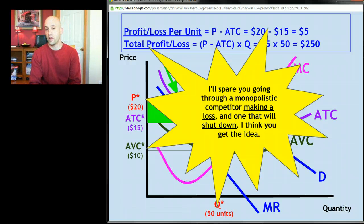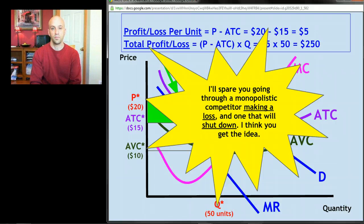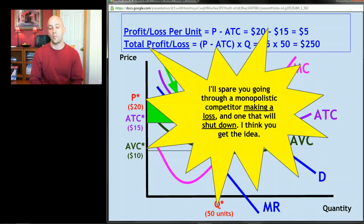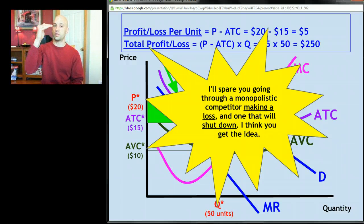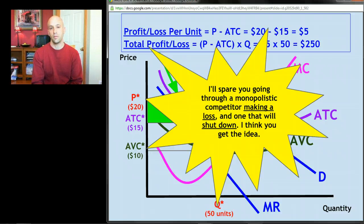I'll spare you going through the analysis for a monopolistic competitor operating at a loss or shutting down, but it's exactly the same as with monopolies. If the price is between average total cost and average variable cost, the firm operates in the short run at a loss. If price is below both average total cost and average variable cost, the firm shuts down in the short run — same deal as monopolies. That takes us through the graphical analysis of monopolistic competition in the short run. Next time we'll get to the long run implications.